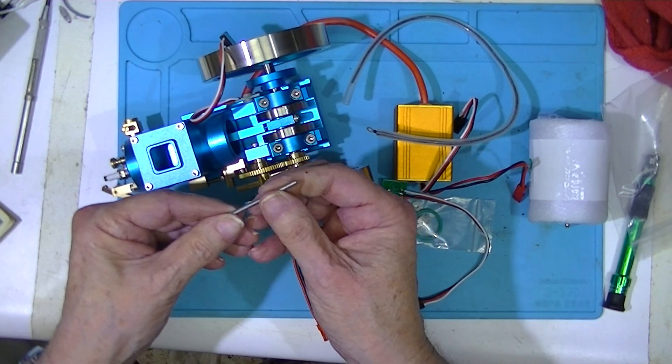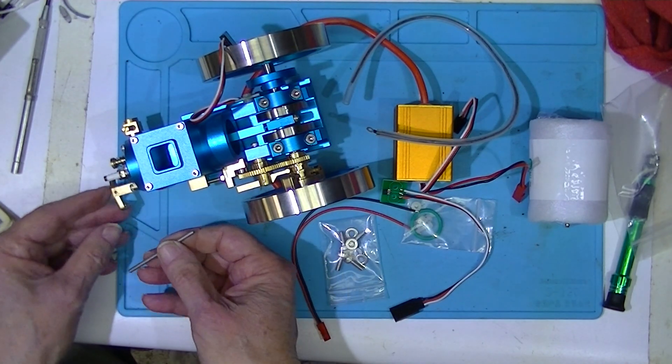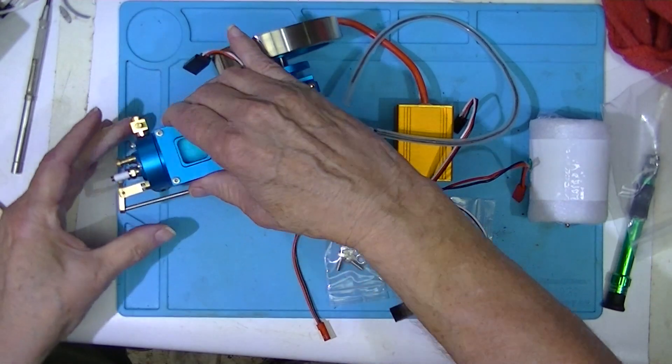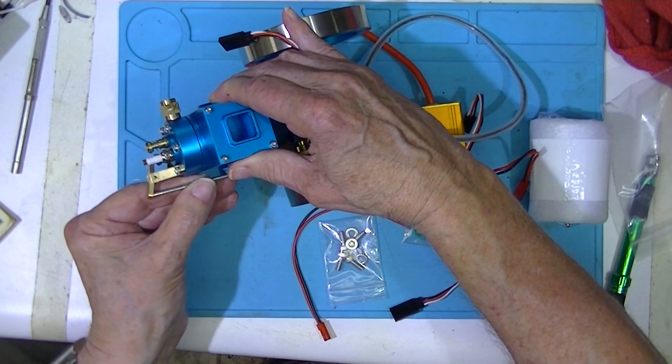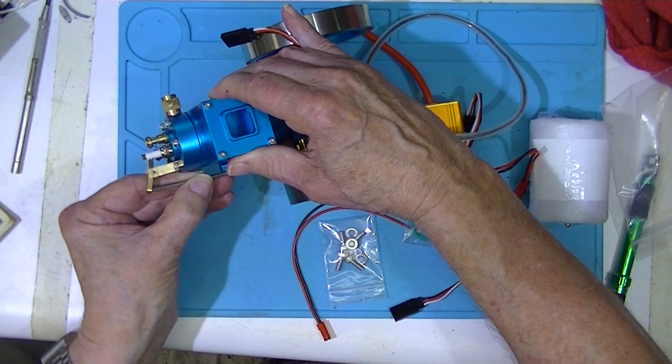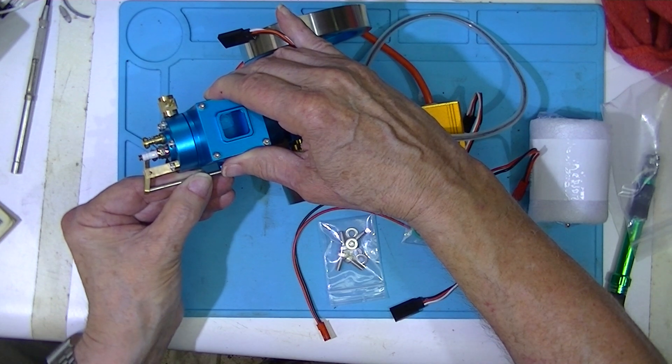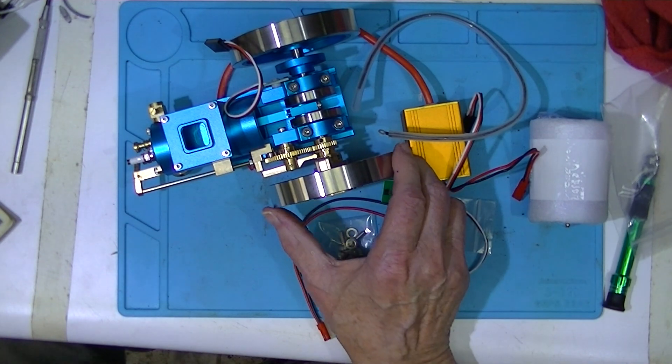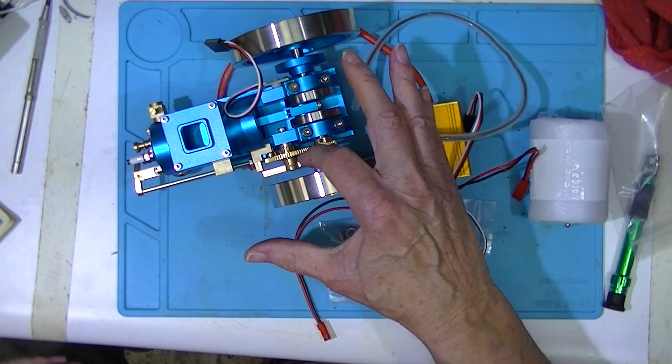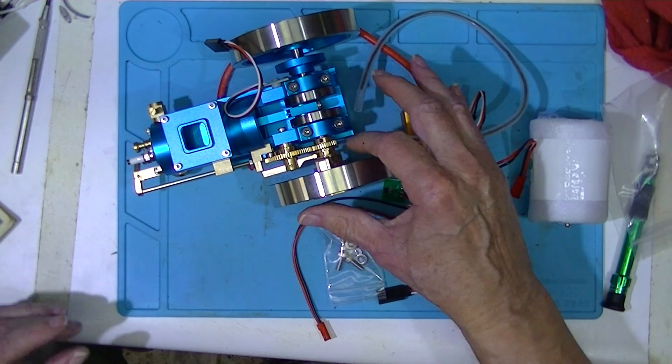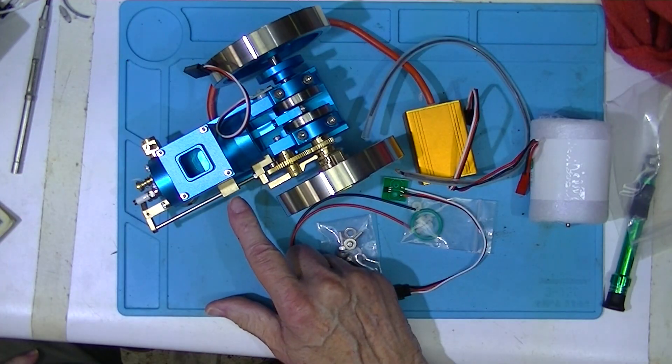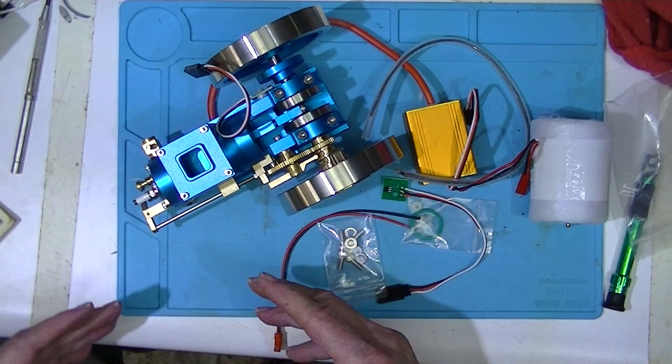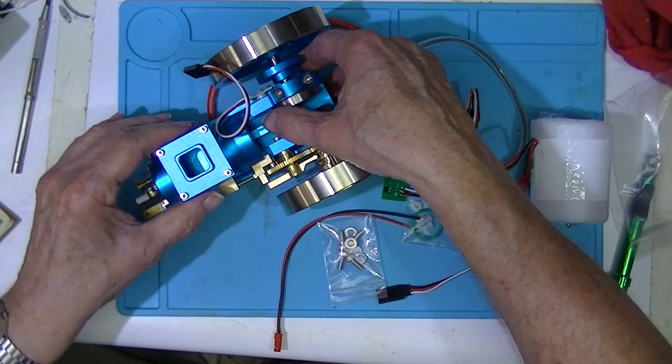There's a push rod to operate the exhaust valve and it fits in like that. There's a set of gears and a cam to adjust the opening and time the opening and closing of the exhaust valve.